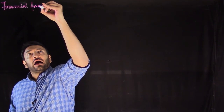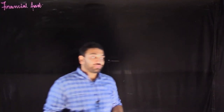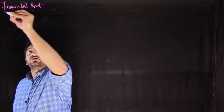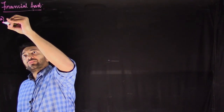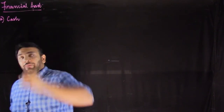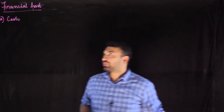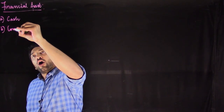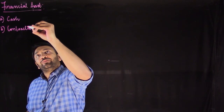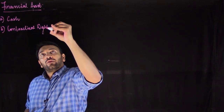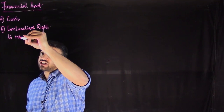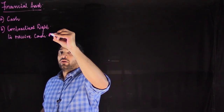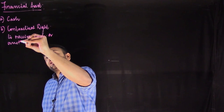Now let's start the discussion on financial assets. What is a financial asset? How do I classify an item as a financial asset? To find or call an item a financial asset, it includes: number one, cash; number two, a contractual right to receive cash or another financial asset.